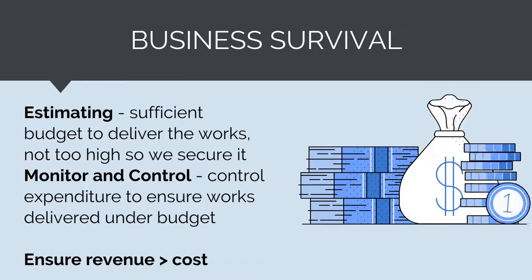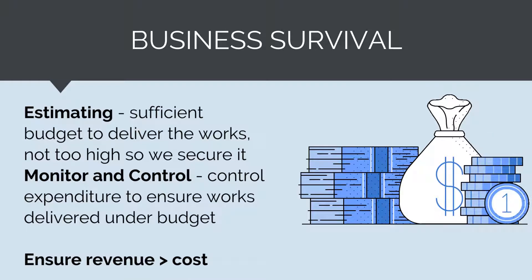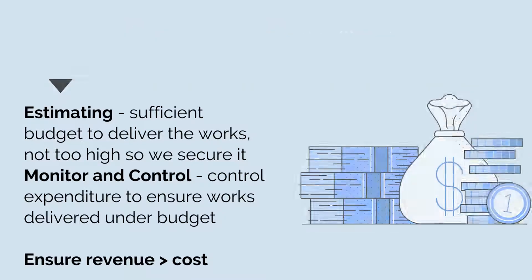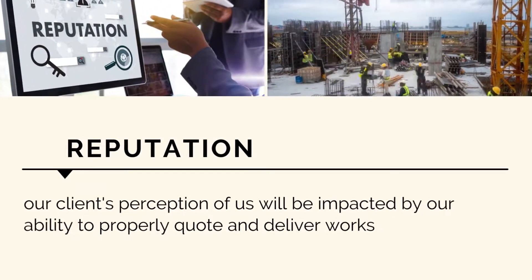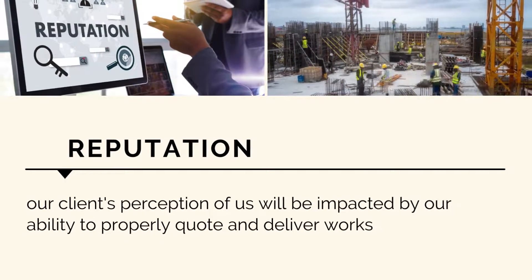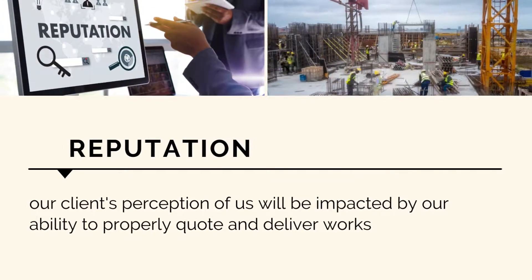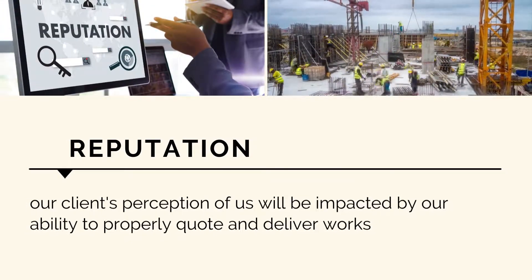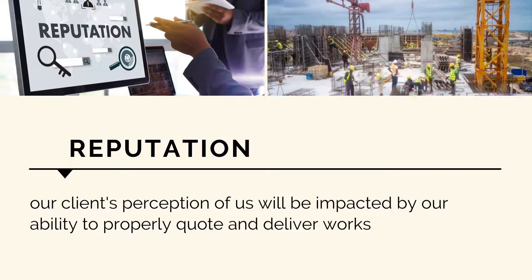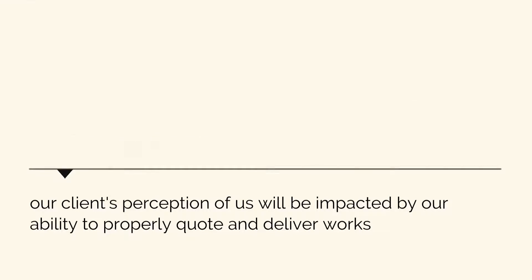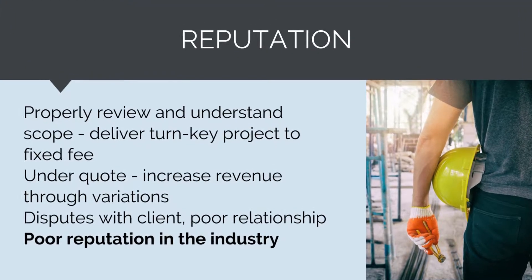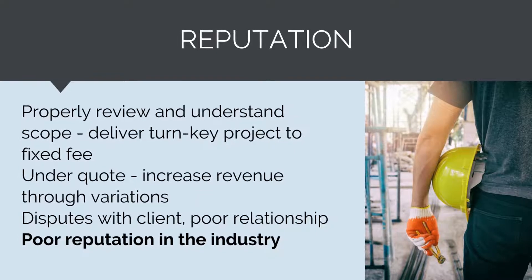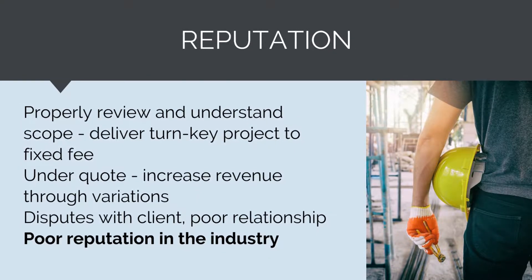Where it looks like we're going to overspend, we'll need to put in place treatments. This will ensure we generate a profit with our revenues being greater than our costs. The next thing we need to consider is our reputation amongst our clients. As a professional contractor, our clients are engaging us to deliver a scope of works under a fixed fee. We need to be able to properly quote and then deliver works in accordance with that quote, properly reviewing and understanding scope.